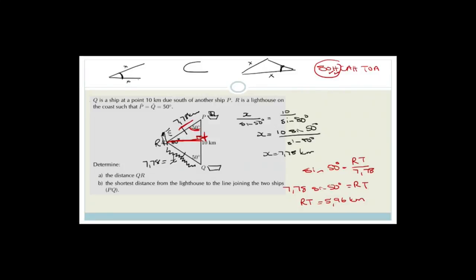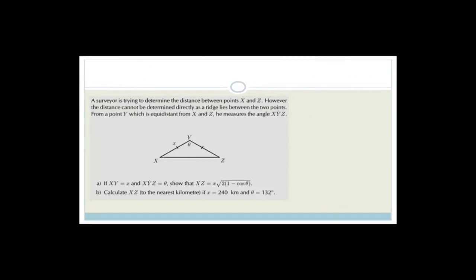So RT = 5.96 kilometres. Grade 11, please remember that if they have units you always have to include the units in the answer — like kilometres or metres — you always include them.